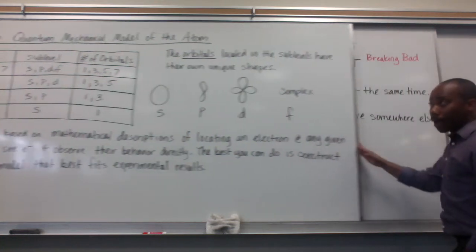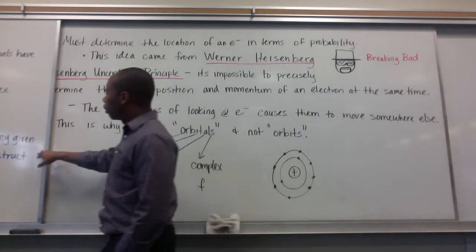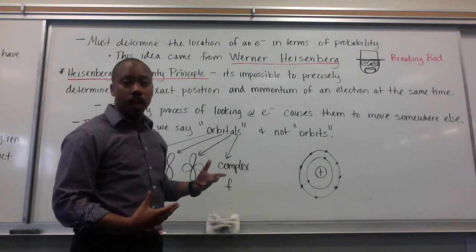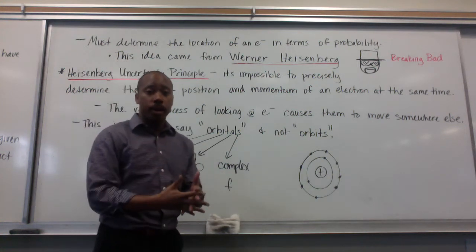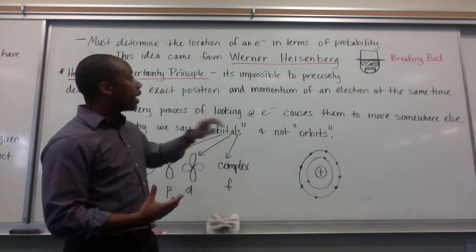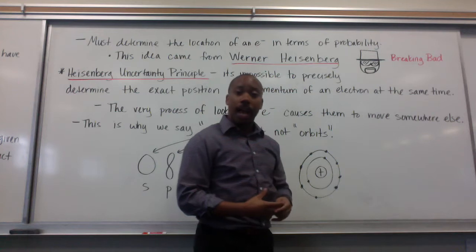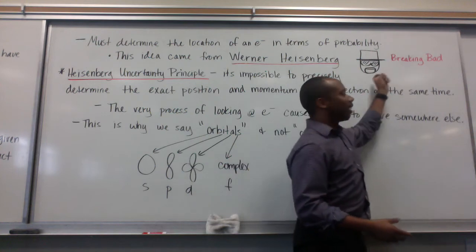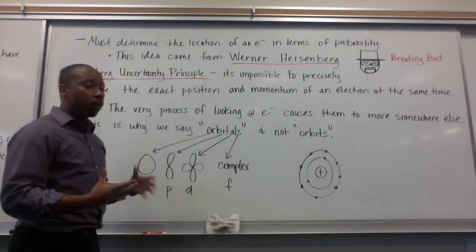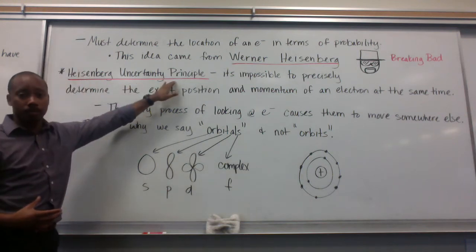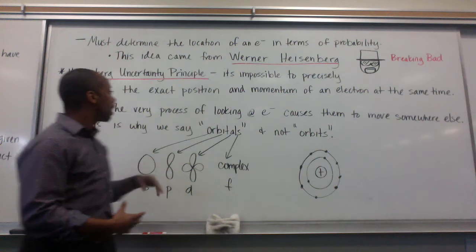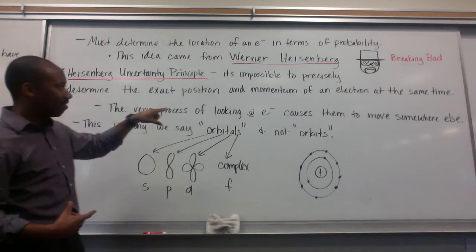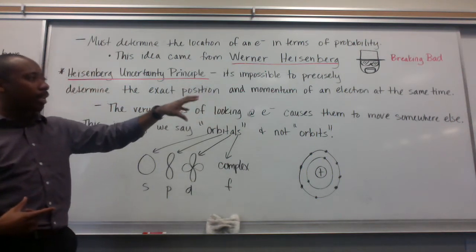Now, let's talk a little bit more about that. We must determine the location of an electron in terms of probability — we can't know exactly where it is, we just have to make a probable assumption. This idea came from a guy named Werner Heisenberg. For those who are Breaking Bad fans, that's where the character got his name. He came up with a principle called the Heisenberg Uncertainty Principle.